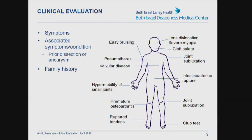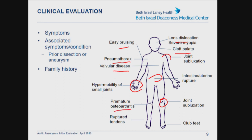Other important features in the review of systems include: do they have easy bruising? Do they have a lens dislocation, which can be associated with Marfan syndrome? Do they have severe myopia, again associated with Marfan? Do they have a history of repaired cleft palate? Do they have a history of spontaneous pneumothorax? Do they have known valvular disease? Do they have multiple prior joint subluxations — dislocated joints with relatively mild trauma? Have they had an intestine or uterine rupture? Do they have hypermobility, particularly in the small joints of the wrists and fingers? Premature osteoarthritis out of proportion to their age and weight? A relatively low-risk ruptured tendon? Or a history of repaired club feet? All of these are associated with connective tissue disorders, primarily Marfan syndrome, but also Ehlers-Danlos and Loeys-Dietz.